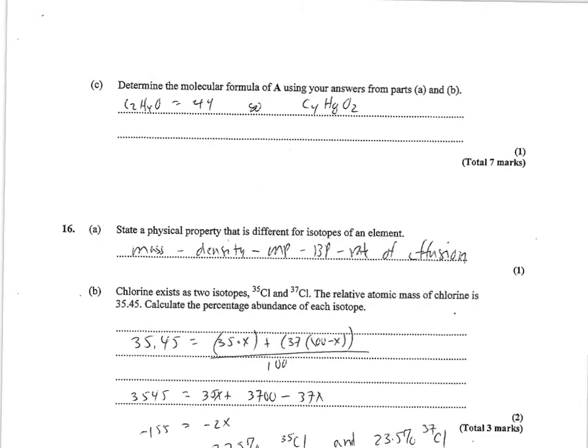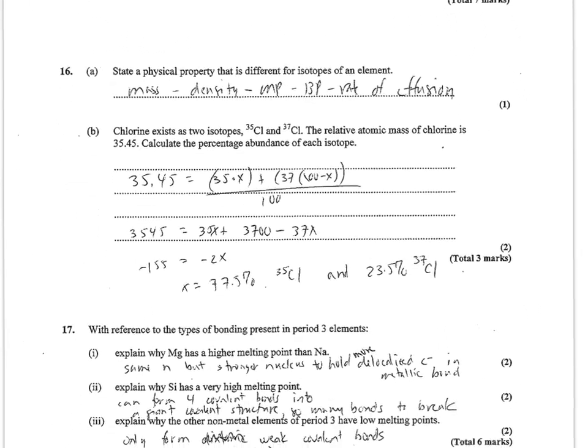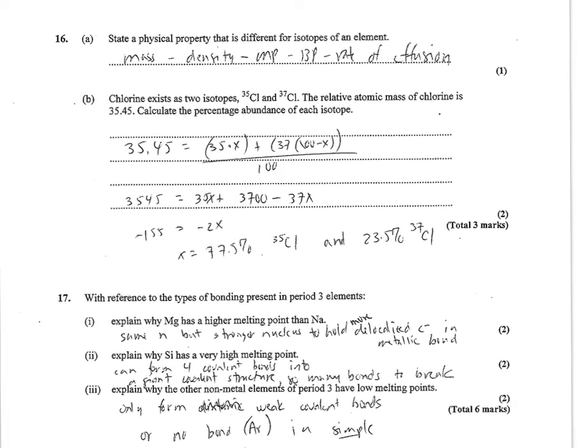Number 16 wants to know a physical property that is different for isotopes of an element. The mass is the big one, which means the density will be different. Melting point and boiling point will tend to increase. Rate of diffusion will be slower. Those are the common physical properties that an isotope affects.